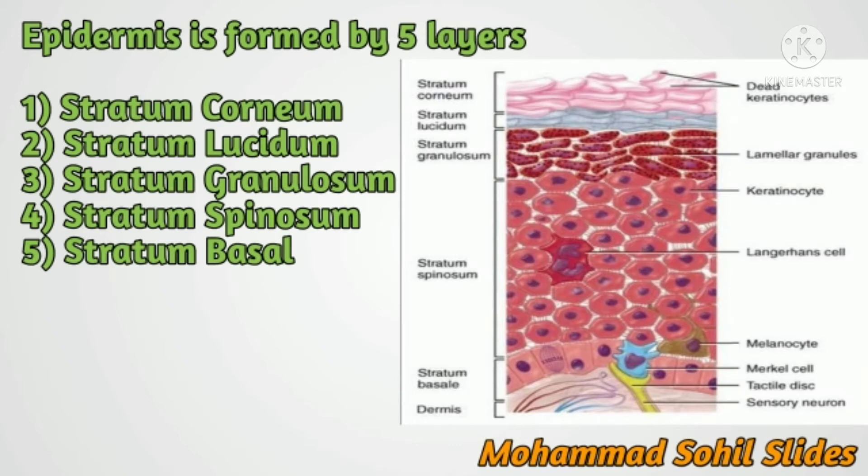Fourth, stratum spinosum, also known as the prickle cell layer. The cells of this layer possess some spine-like protoplasmic projections. The cells are connected to one another.